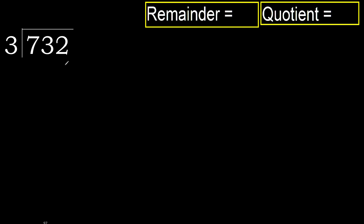732 divided by 3. 7 is not less, therefore with 7: 3 multiplied by which number is nearest to 7 but not greater?